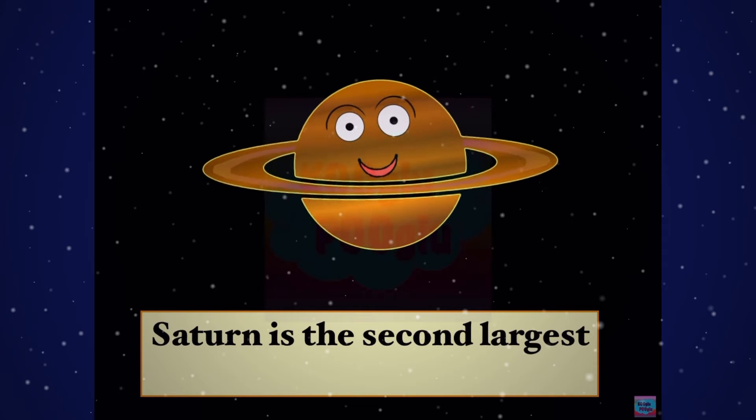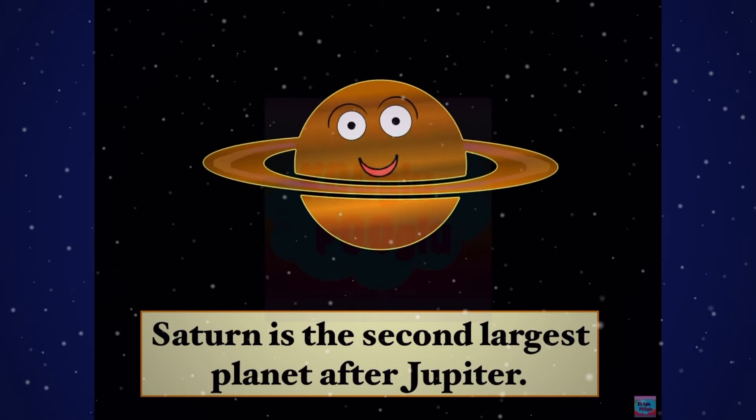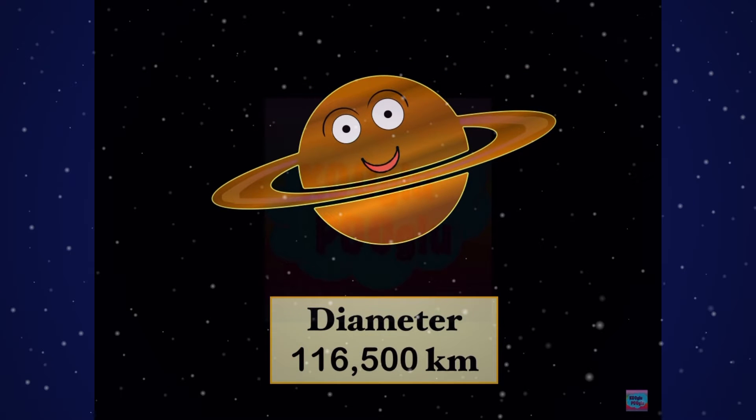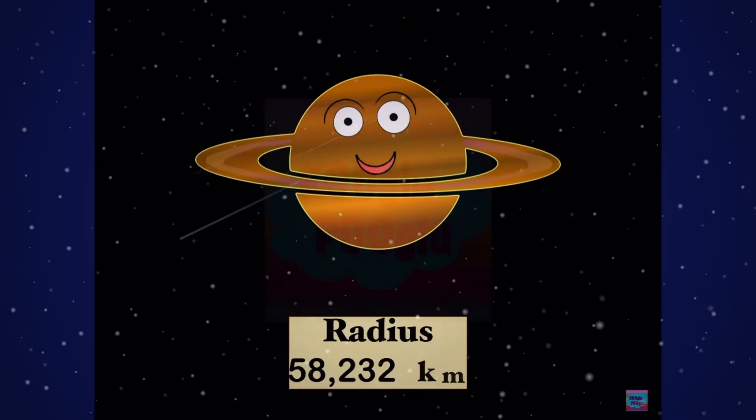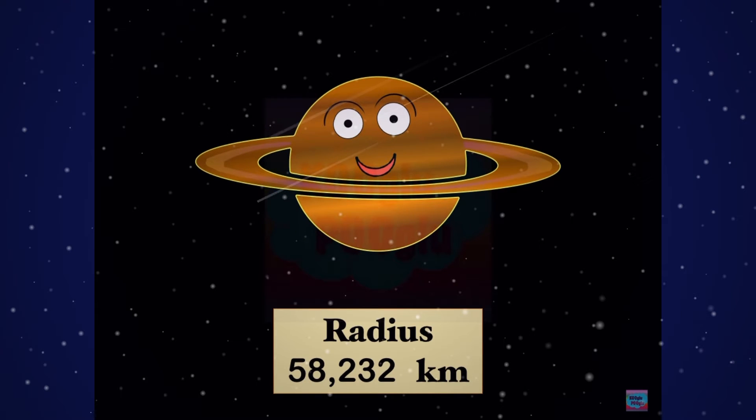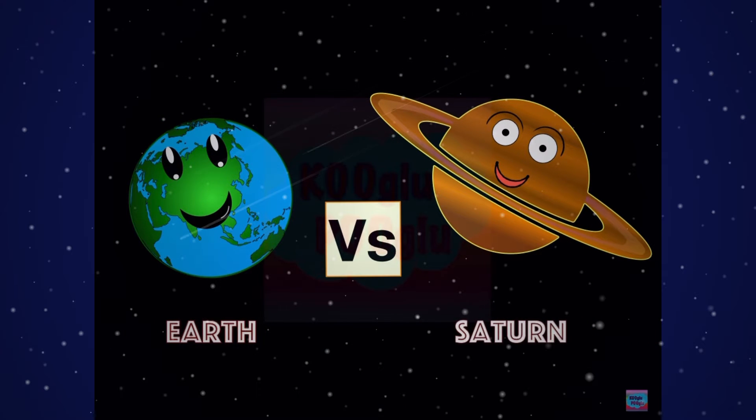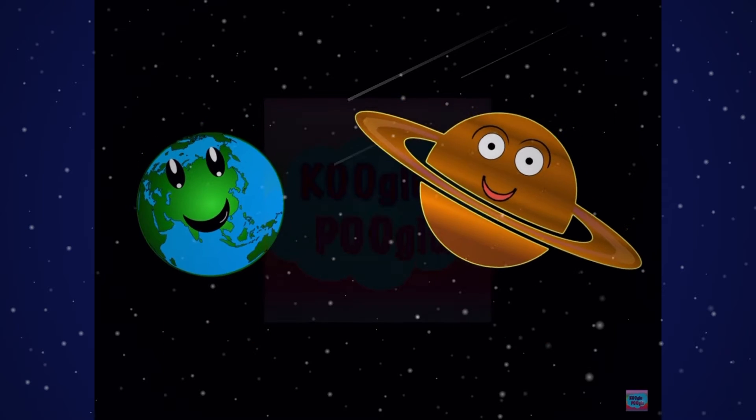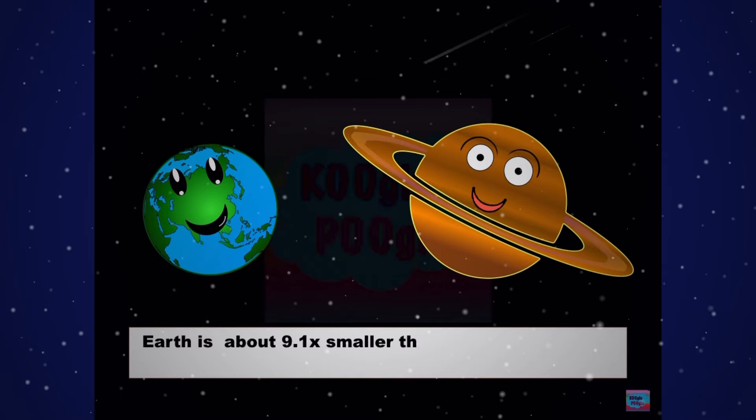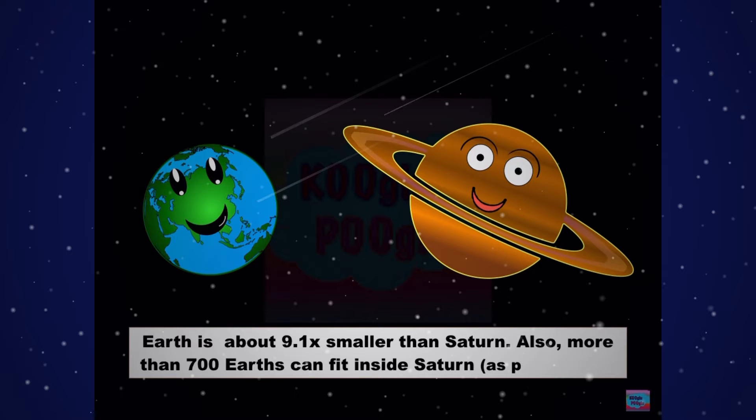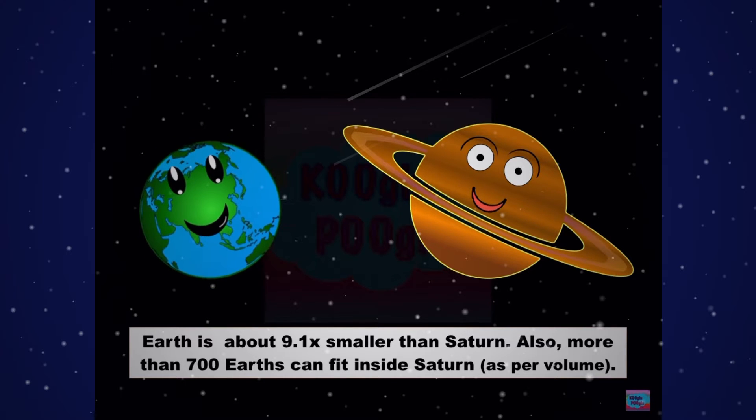Saturn is the second largest planet after Jupiter. The diameter of Saturn is 116,500 kilometers and the radius is 58,232 kilometers. Earth versus Saturn: Earth is about 9.1 times smaller than Saturn. Also, more than 700 Earths can fit inside Saturn as per volume.